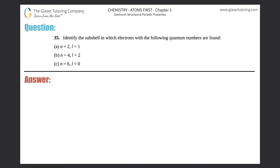Number 35: identify the subshell in which electrons with the following quantum numbers are found. I have parts a through c. In order to identify the specific subshell, you need information from both n and l — the combined information of the shell and the subshell will tell you the specific subshell you're talking about.